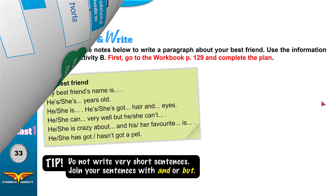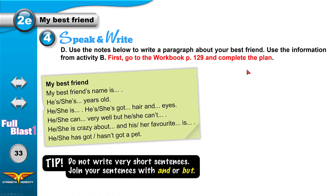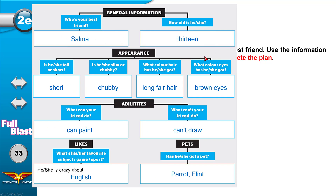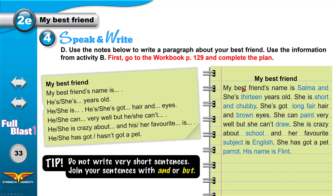Now let's get back to writing our paragraph. My best friend's name is Selma and she's 13 years old. She's short and chubby. She's got long fair hair and brown eyes. She can paint very well, but she can't draw. She's crazy about school — she loves school — and her favorite subject is English. She's got a pet parrot; his name is Flint. Thank you for watching this video. If you like it, please share it with friends. I'll catch you in the next video — until then, thank you and goodbye.